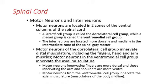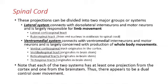So, the motor neurons innervating the fingers are more dorsal, and those innervating the arms and shoulders are more ventral. The motor neurons from the ventromedial cell group innervate the axial musculature of the body midline. Those are the two overall motor pathways that are important to be familiar with.